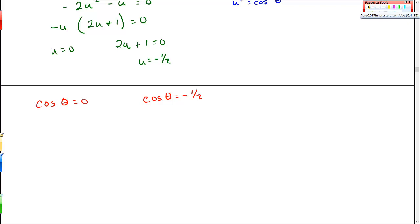Cosine theta is 0 at theta equals pi over 2 or at 3 pi over 2. And actually, I can write this in general terms as pi over 2 plus k pi. It repeats every pi. I come back to that 0.